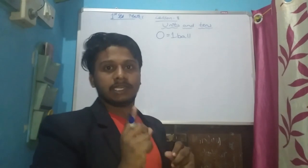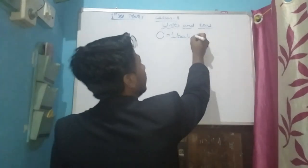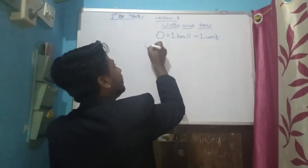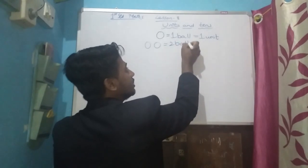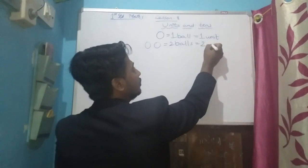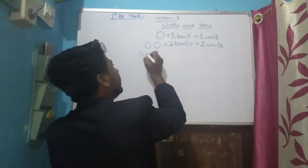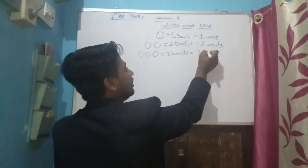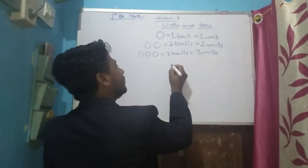Each object is considered as one unit. So here, one ball means one unit. The same way, if I consider two balls, how many units will be formed? One, two — so that is two units. The same way, if I consider three balls, how many units will be formed? Three units.